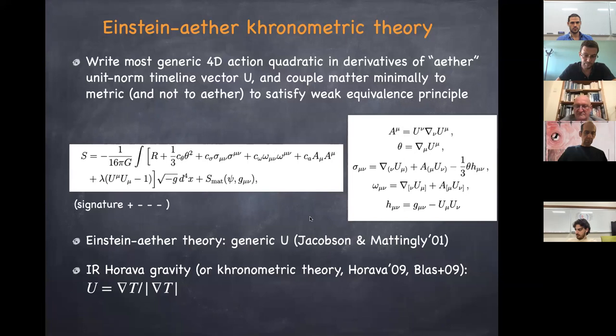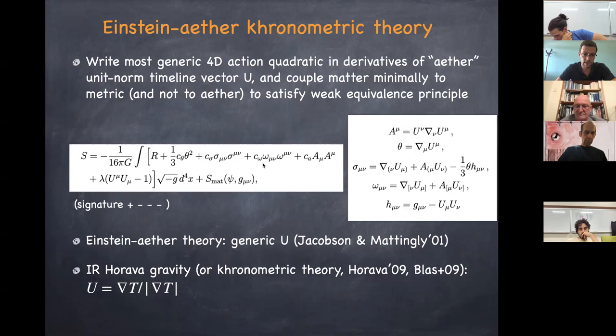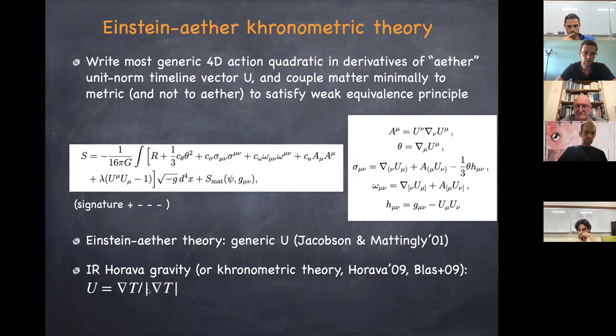The other version is Hořava gravity, where instead of a preferred threading you have a preferred foliation. In this case the vector field is hypersurface-orthogonal — there is no vorticity term because vorticity vanishes for a hypersurface-orthogonal vector field. The vector field is the gradient of a scalar called the khronon, whose level sets constitute the spacelike surfaces of the preferred foliation of spacetime.